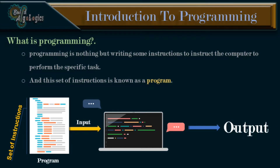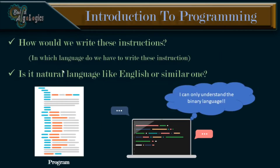So far we understood what is programming and what a program looks like. But still we have many questions in our mind — like, how would we write these instructions? In which language do we have to write these instructions? Is it a natural language like English or something similar? To get better answers to these questions, we'll first see the language of the computer — what is the language that the computer actually understands?